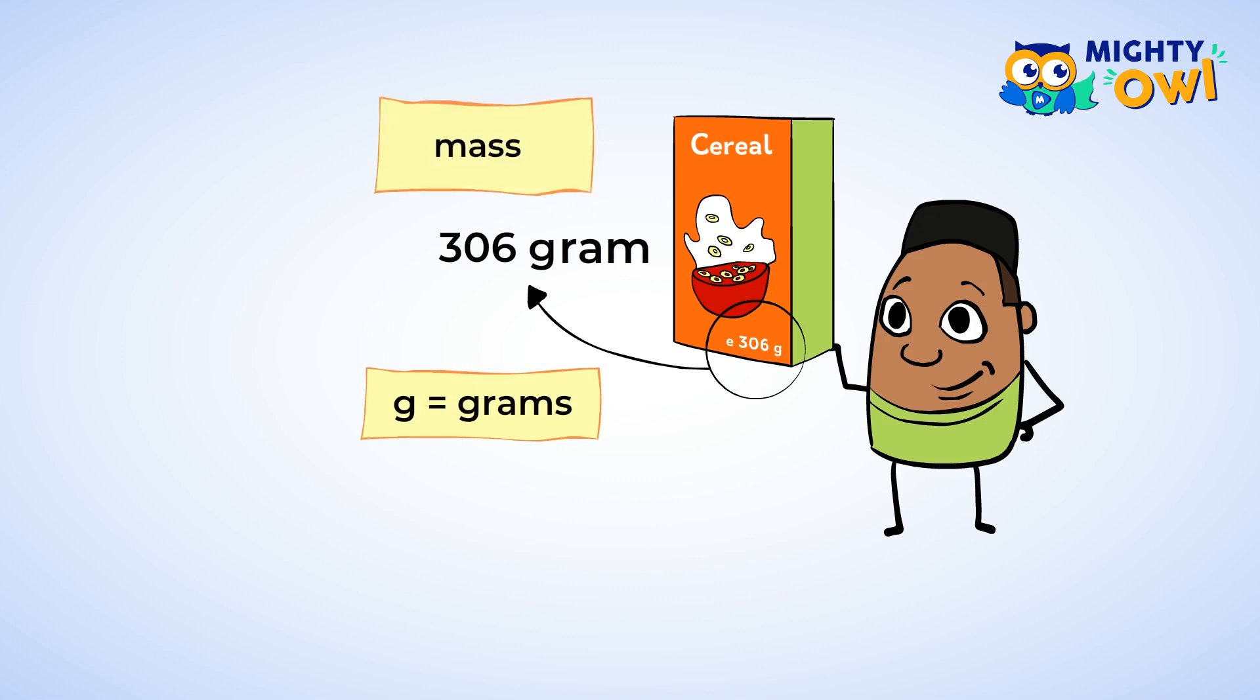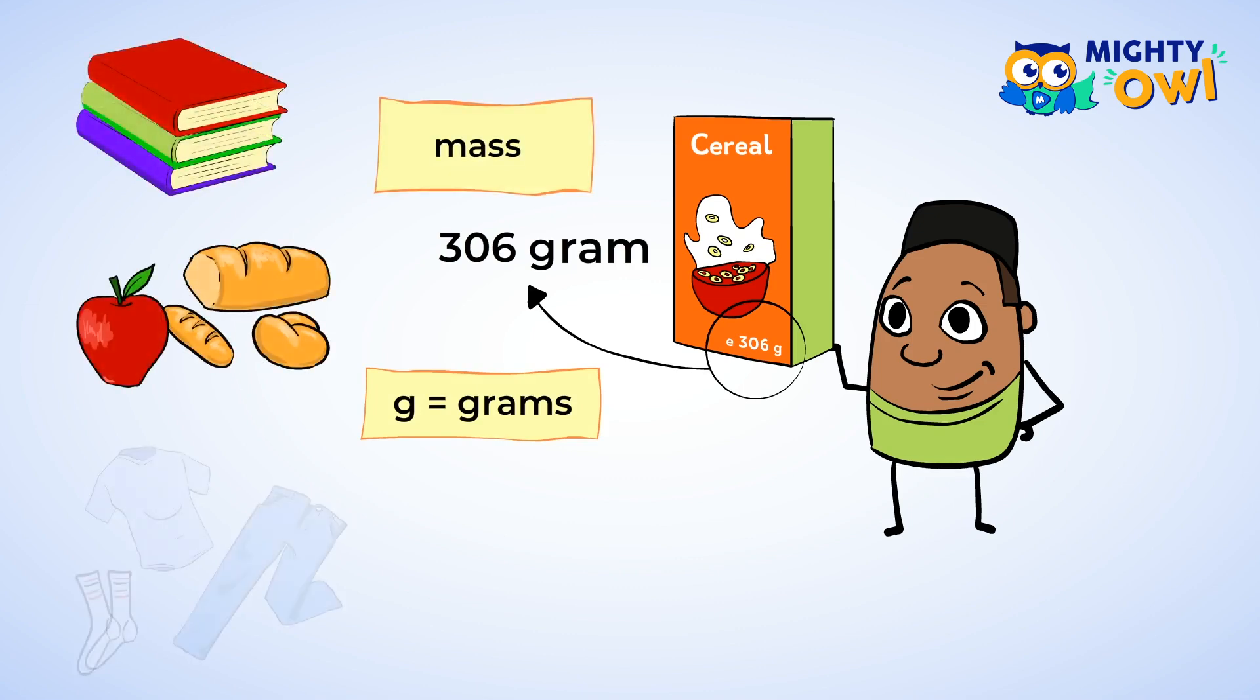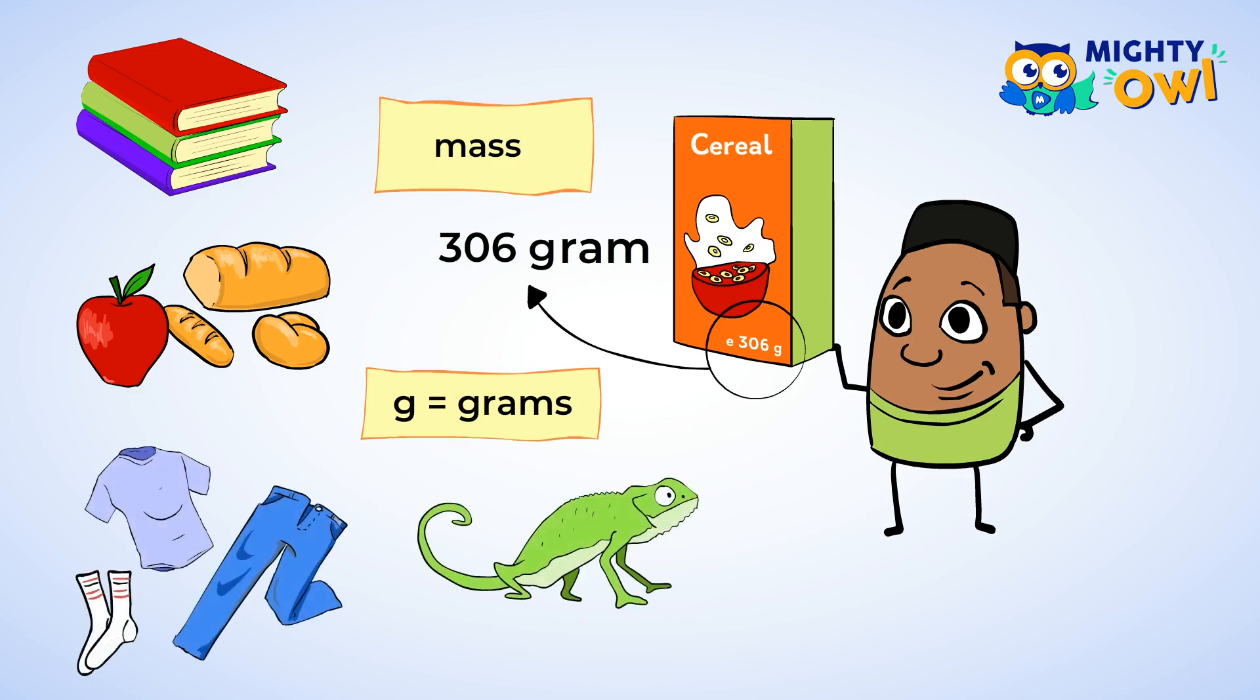Grams are used to find the mass of smaller things, like books, food items, clothing, maybe even your pet lizard.